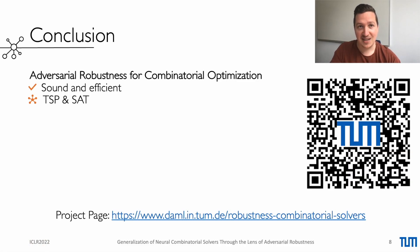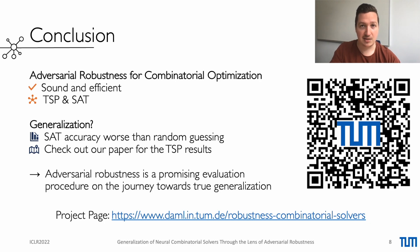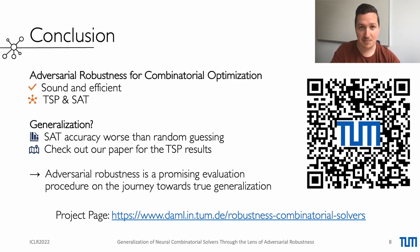Let me recap. In contrast to other domains, in adversarial robustness for combinatorial optimization, we can obtain the true label of a perturbed instance and do not rely on subjective proxies such as unnoticability. We propose such sound perturbation models for TSP and SAT that are also efficient. Even though I have only presented the results for SAT, the evaluated TSP solvers are also very fragile with respect to small perturbations. We aimed to generalize problem instances across different domains or larger sizes, but we are most likely not there yet. Nevertheless, adversarial robustness provides a promising and challenging evaluation procedure on the path towards true generalization. I encourage you to check out our paper and visit us at the poster session. Thank you.